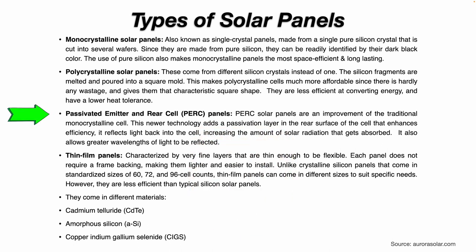Then we have passivated emitter and rear cell panels, or PERC panels. These solar panels are an improvement of the traditional monocrystalline cell. This newer technology adds a passivation layer in the rear surface of the cell that enhances efficiency. It reflects light back into the cell, increasing the amount of solar radiation that gets absorbed. It also allows greater wavelengths of light to be reflected.